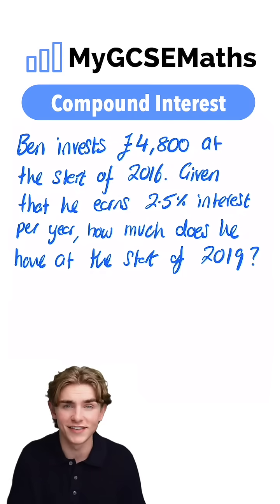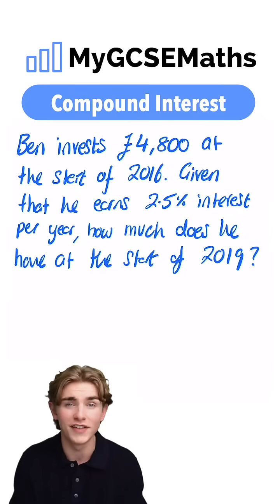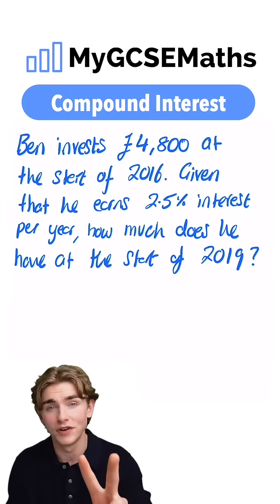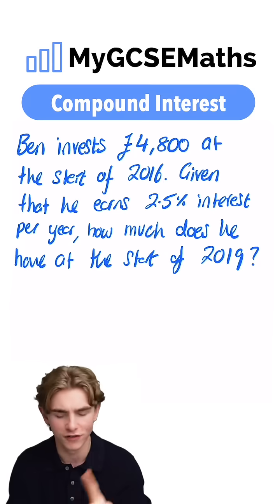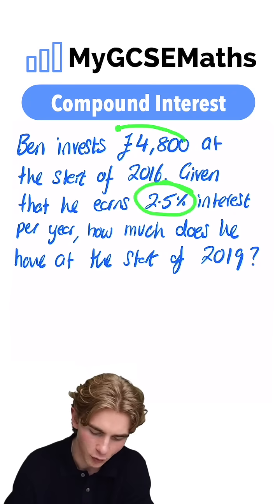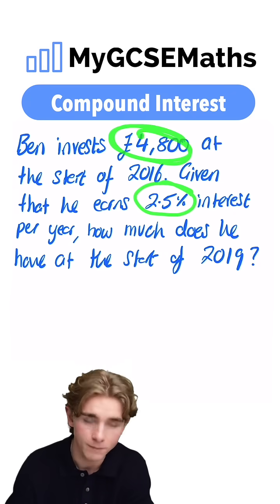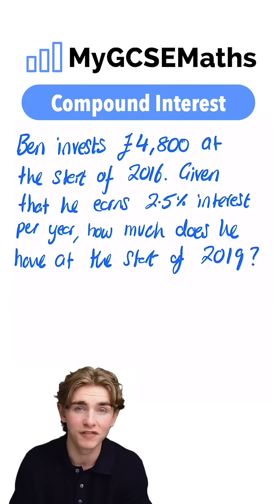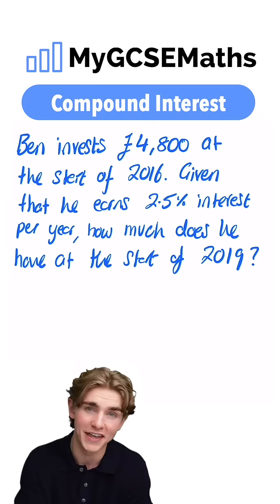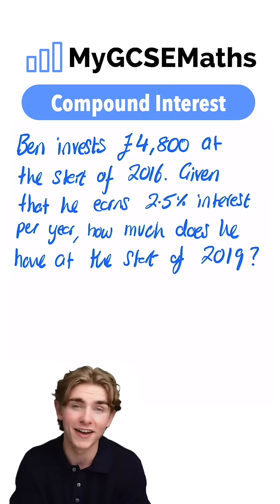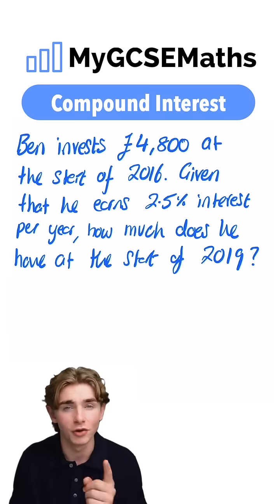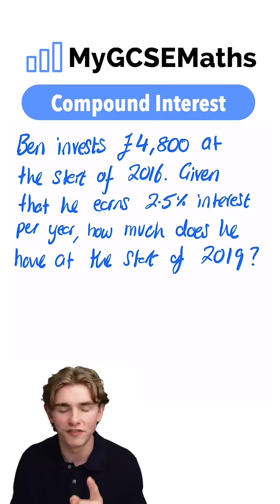It doesn't say that it's simple interest, so we're going to know that this is compound interest. There are two different ways to do this. The first way is to find 2.5% of £4,800, add it on, find 2.5% of that, add it on again, find 2.5% of that and add it on again — but that's a little bit long, so let's use our formula.